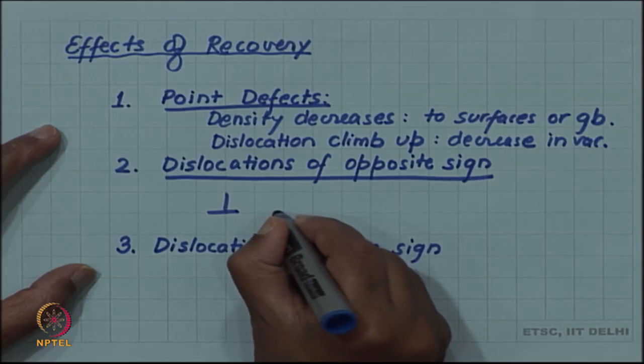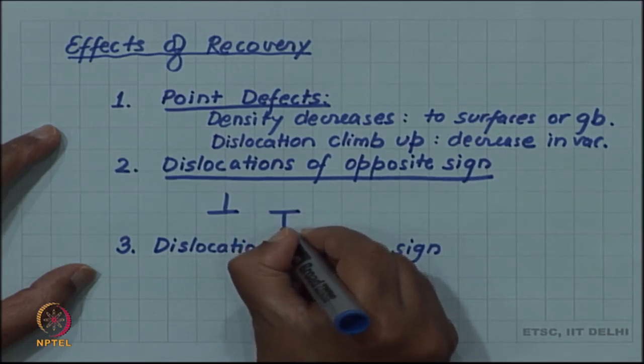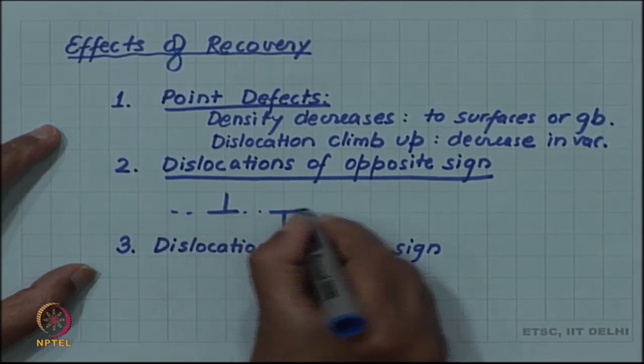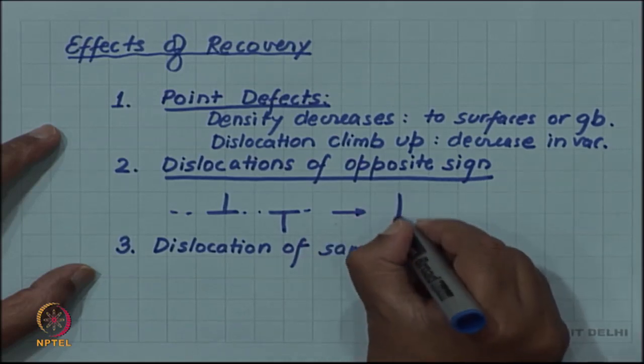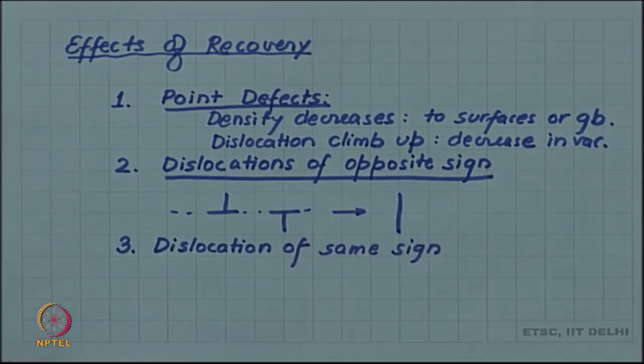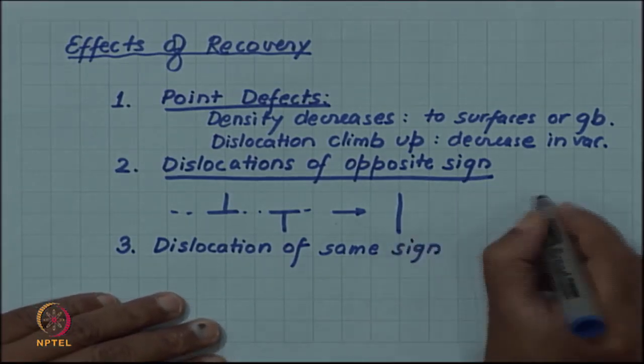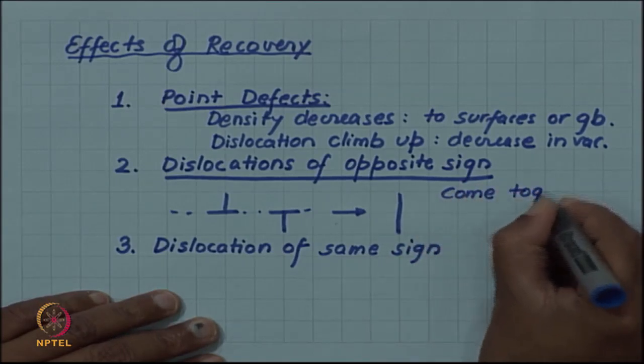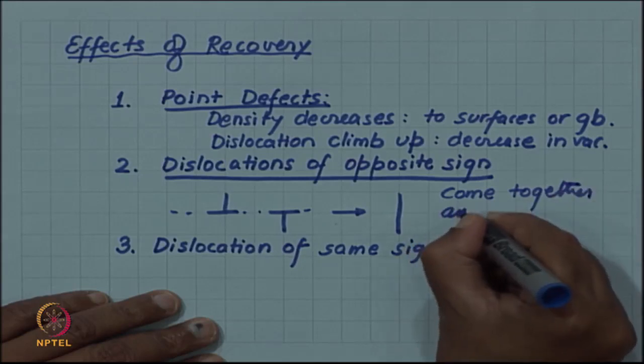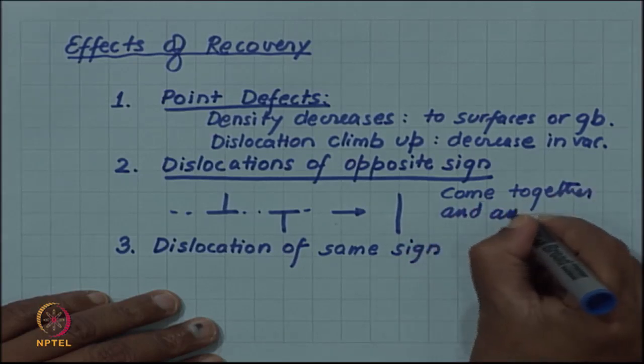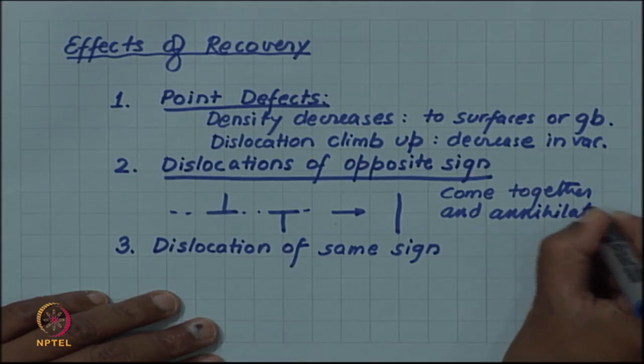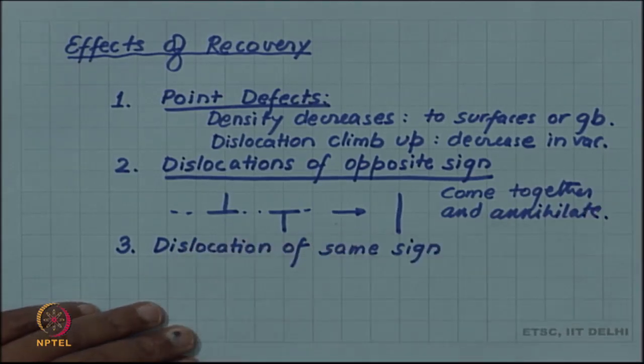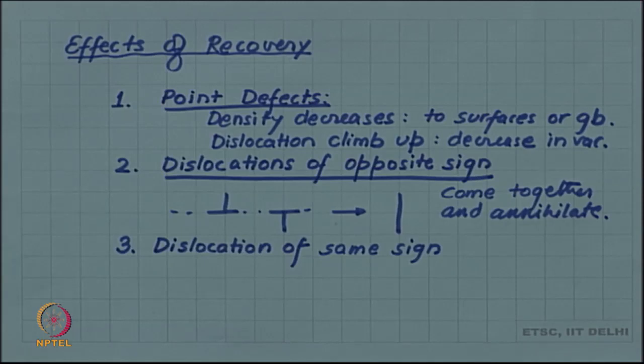You know that if you have a positive dislocation and a negative dislocation on the same slip plane, they may come together and form a continuous plane, so there is no dislocation. Dislocations of opposite sign come together and annihilate. I have shown it for edge dislocation; same is true for right-handed and left-handed screw dislocations.